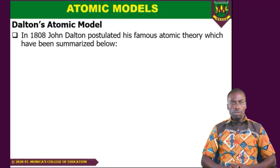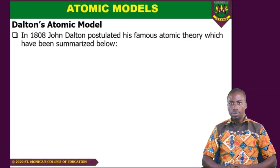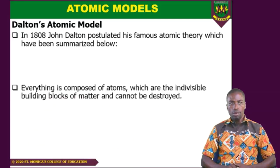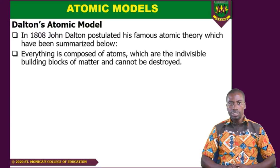Now we are going to look at various models that were used to propose the structure of the atom that we are using currently. We are looking at Dalton's atomic model. We are not going to go into full details — you can read those for yourself — but we are going to look at the summary of Dalton's theory. In the year 1803, John Dalton posted his famous atomic theory. The summary: everything is composed of atoms, which are the indivisible building blocks of matter and cannot be destroyed.